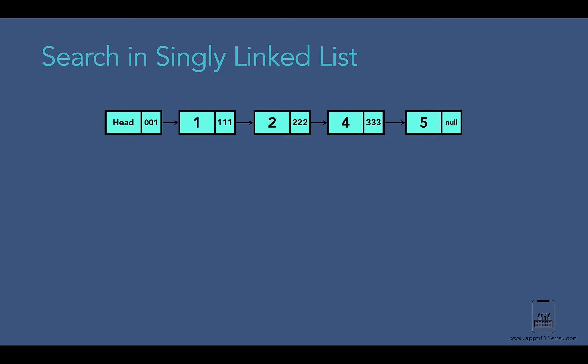In this video we will look at how to find a node value in a given singly linked list. We use traversal to search for a value in a given linked list. The only difference is that as soon as we find the searched node we terminate the loop and exit. In the worst case we might travel from the first node to the last node, as we did in traversal.